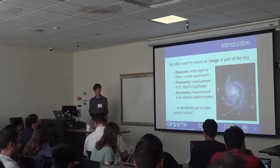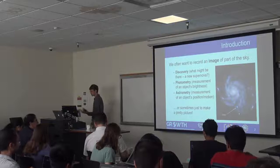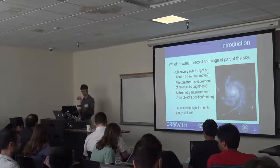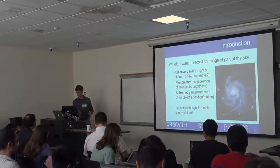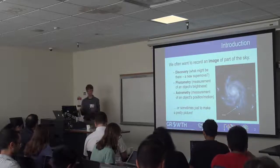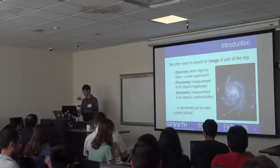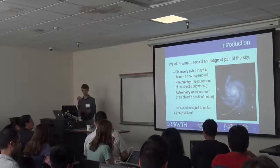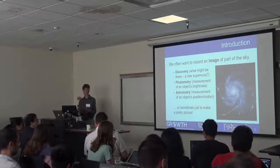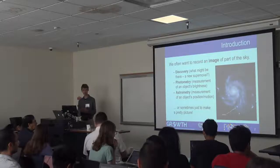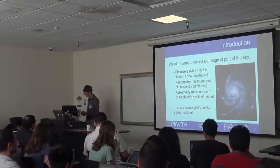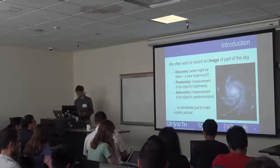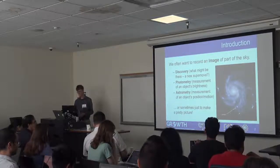Sometimes you want to take measurements. We want to do photometry, which is to measure how bright an object is, how many photons it's putting out per second at a specific wavelength. Or we may want to measure its position, which we call astrometry, which is a precise measurement of whether it's changing its position in sky. And sometimes you just want to take a pretty picture and show it to the public. So all these things fall under astronomical imaging.